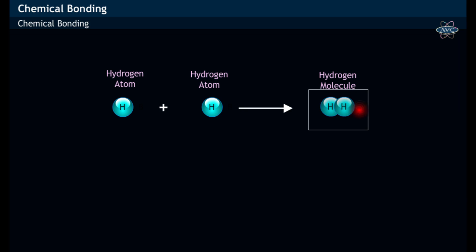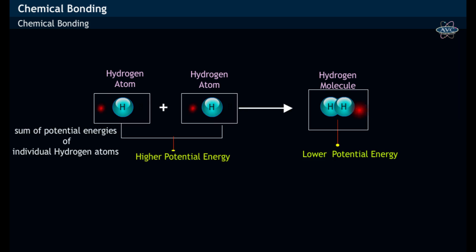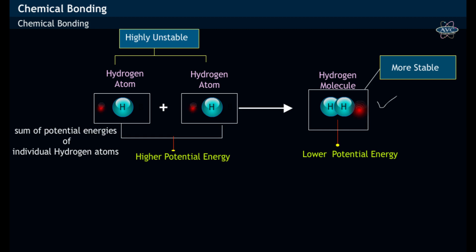The hydrogen molecule formed has got lower potential energy compared to the potential energy of individual hydrogen atoms. Hence, hydrogen molecule is more stable when compared to individual hydrogen atoms.